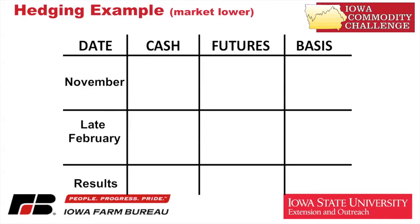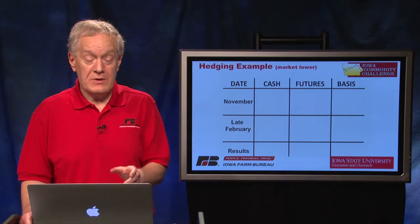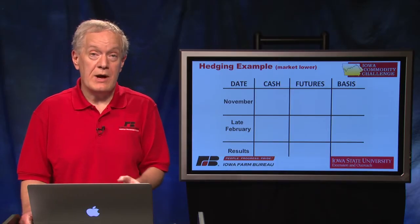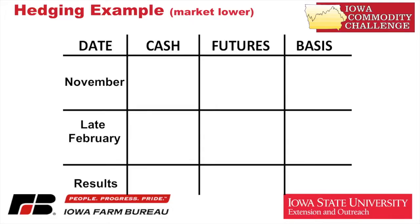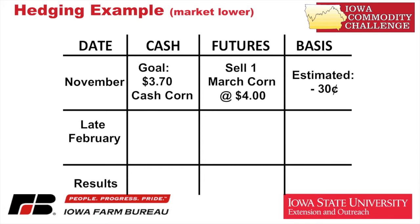We can track the cash market, the futures market, and basis in this T-diagram. In our simulation we use a central Iowa cash market at Bondurant, Iowa. We have a goal of $3.70 for central Iowa cash at Bondurant, we sell March corn futures at $4.00, and we estimate basis to be $0.30 under. So we're doing something in that futures column right now — selling March corn futures that we're going to have to do later on in the cash market anyway, in late February.